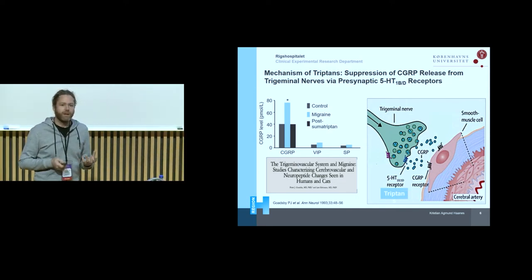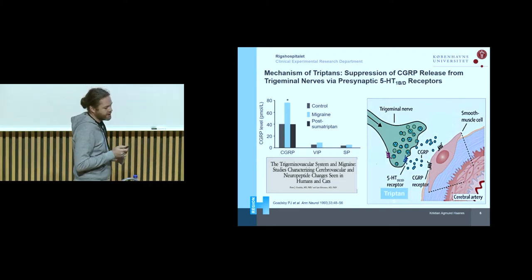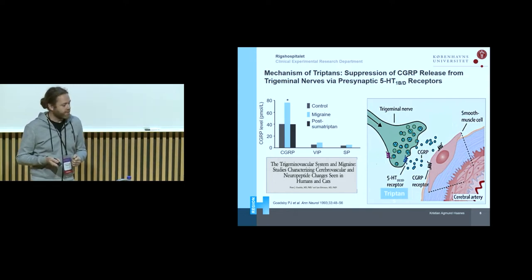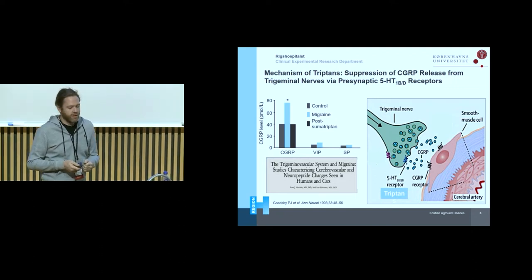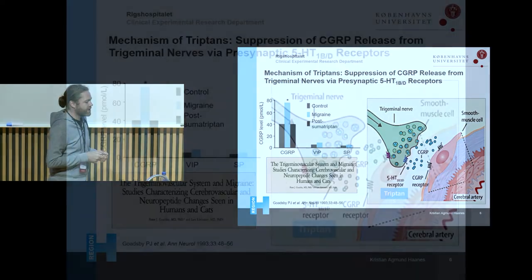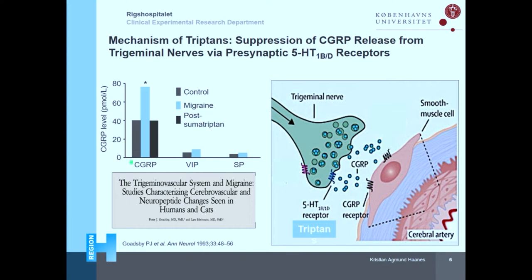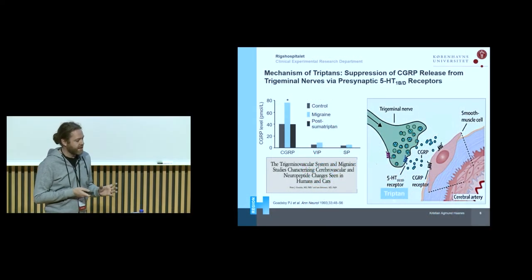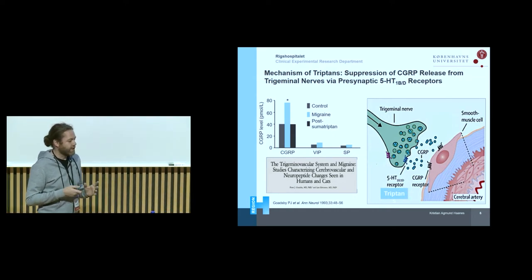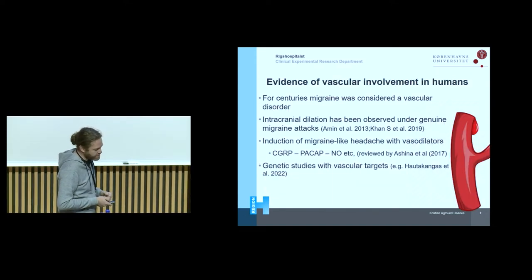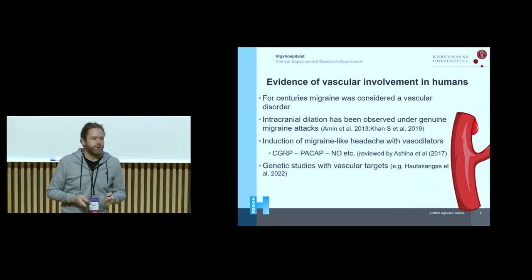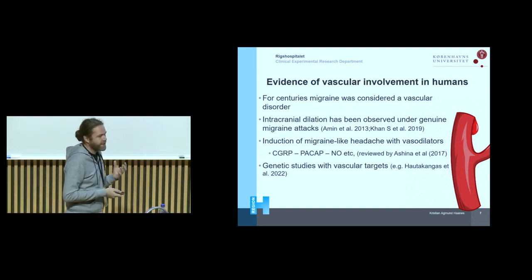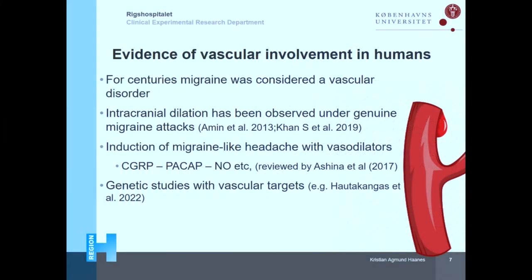Where it started to move away from the vasculature was when studies used triptans. CGRP was again increased during the migraine attack, but the triptans did not only cause constriction — they also reduced the CGRP. This raised the key question: are we really looking at CGRP on the vasculature, or are we looking at CGRP based on what is happening with the nerves? We're still a little bit in this debate — whether effects are triggered first from the CNS, and whether in the periphery it is the vasodilation that leads to pain, or the CGRP itself.